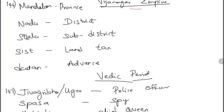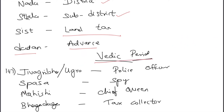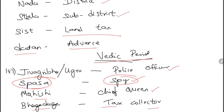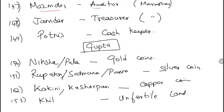Vijayanagara Empire terms: Mandalam means provinces; Nadu means district; Stala means sub-district; Sist was the land tax; Dadan means advance payments. Vedic period facts: Jivagraha or Ugra were police officers; Spasha means spy — 'spasha' looks similar to 'spies.' Mahishi were chief queens; Bhagadugha were tax collectors.